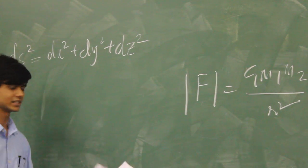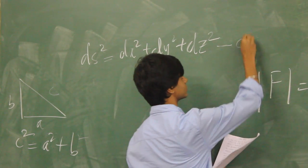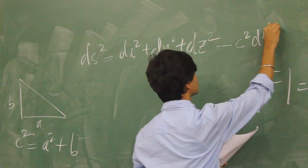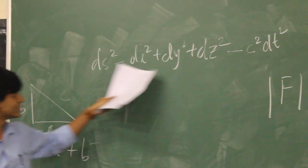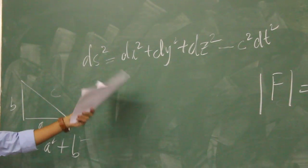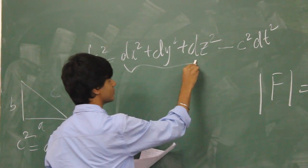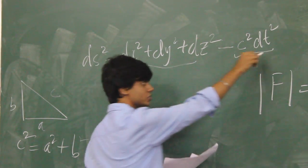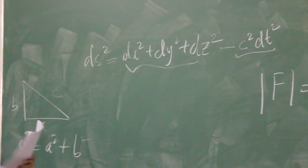So Einstein put one step forward and he tried to incorporate time into this equation by adding this term, which is c squared dt squared, minus c squared dt squared. This entire equation is called the space-time metric. It has 3 dimensions of space and one dimension of time. This was the birth of the space-time fabric in the metric form.